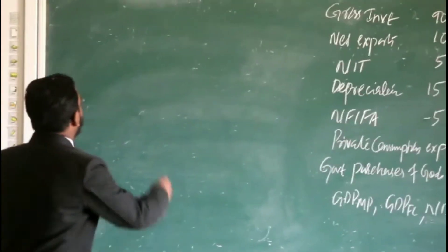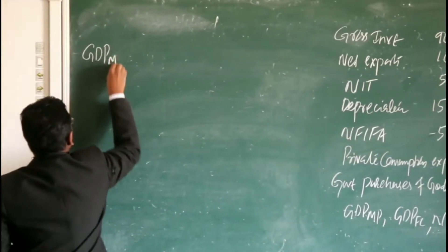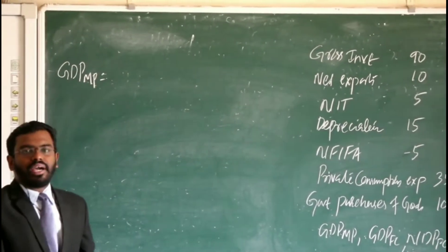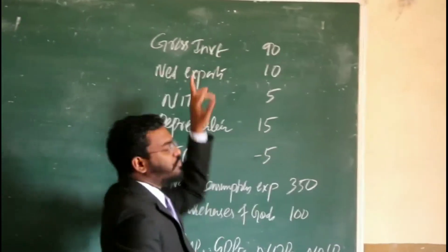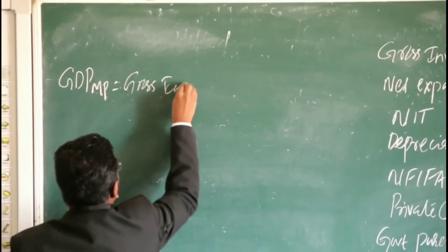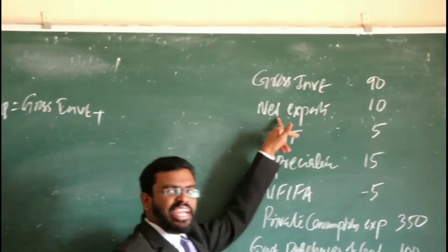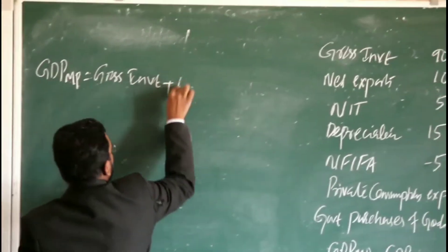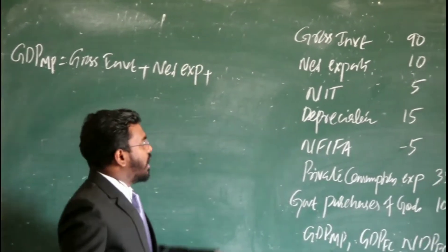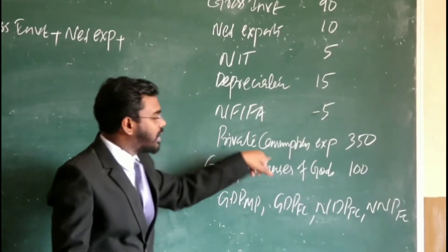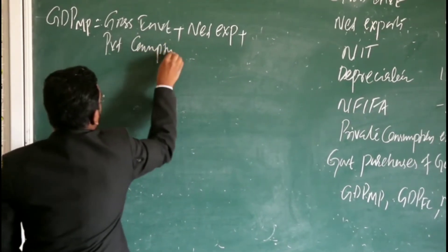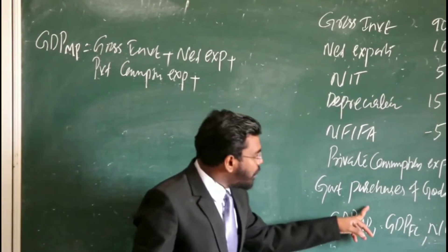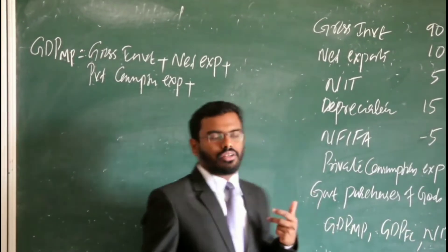Firstly, we can calculate GDPMP. How we can calculate GDPMP? By adding all the expenditures. What are the expenditures given in the question? Gross investment — gross investment means total investment, so it is an expenditure. Then net export, it is also a part of expenditure. Then private consumption expenditure, and government purchases of goods, that means government expenditure.